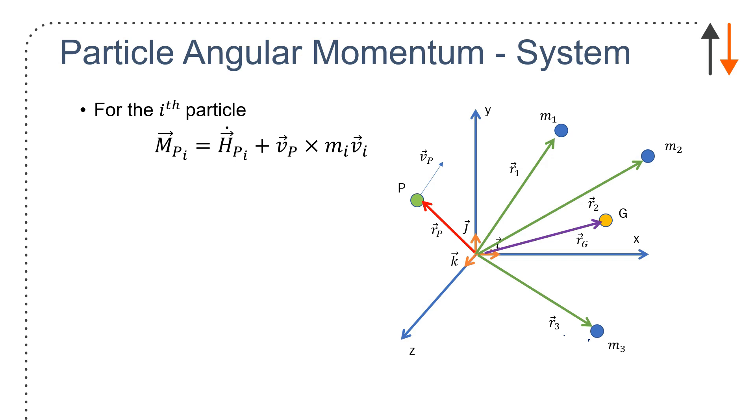r_p has a velocity, v sub p, and each of the masses have their own velocity, v1, v2, v3.